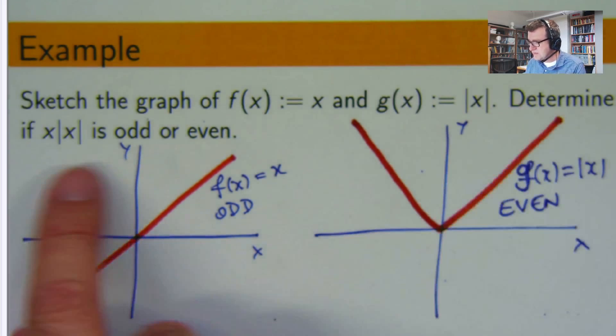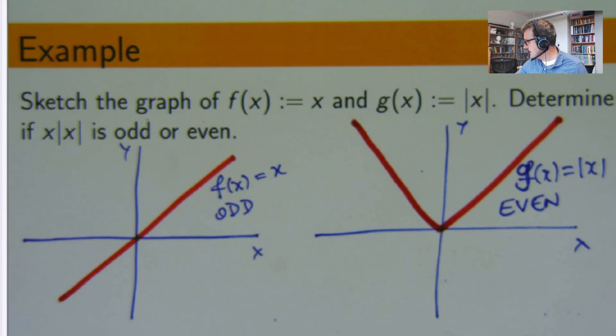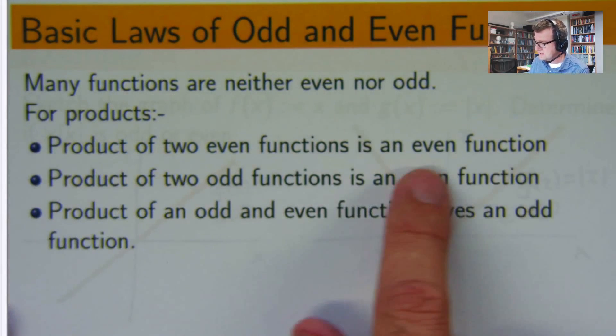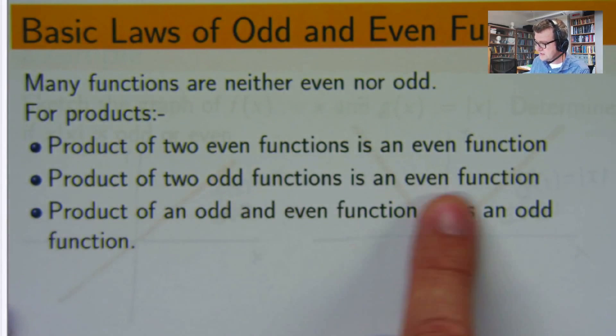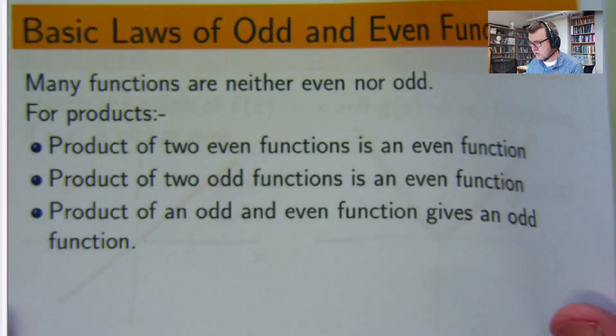Second part, determine if the product is odd or even. So we did look at this in the previous video. And we looked at these things: the product of two even functions is an even function, two odd functions is an odd function, odd and even gives an odd function, and that's the same with quotients.